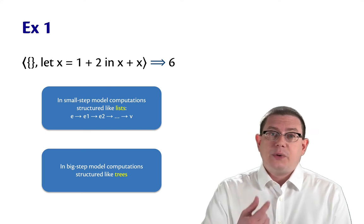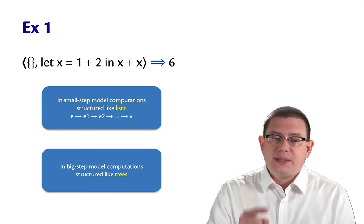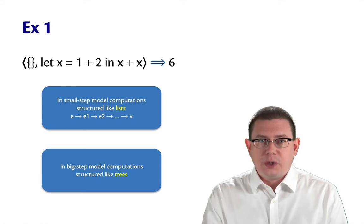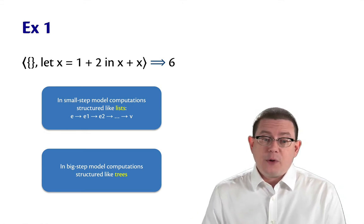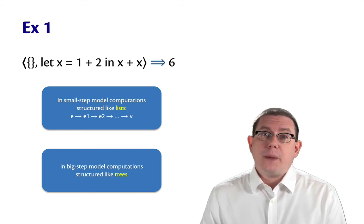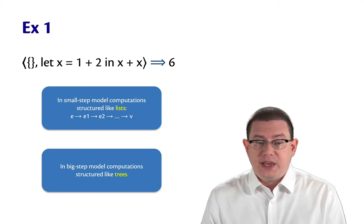In a sense, it was like a list where we start with expression E and then it steps to E1 and then to E2 and so forth, and eventually to a value. In this big-step environment model, we're structuring computations as trees instead.